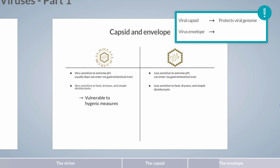So, what's the advantage of a viral envelope? The biological membrane that forms the envelope is derived from the host cell, originating from compartments such as the endoplasmic reticulum or Golgi apparatus, or from the plasma membrane. This provides a shield, protecting the virus particle more efficiently against the attack of the host immune system, although the viral envelope is embedded with viral proteins.